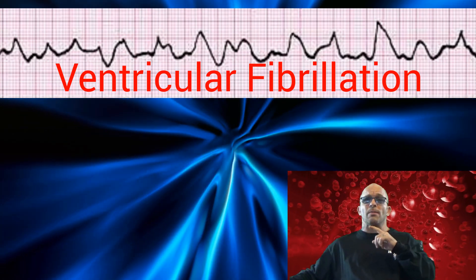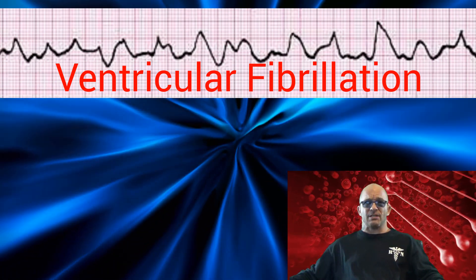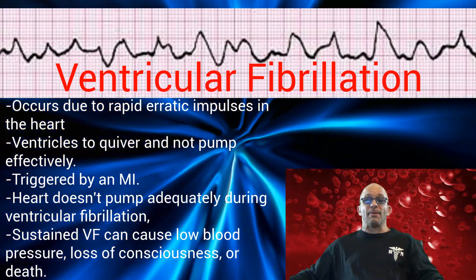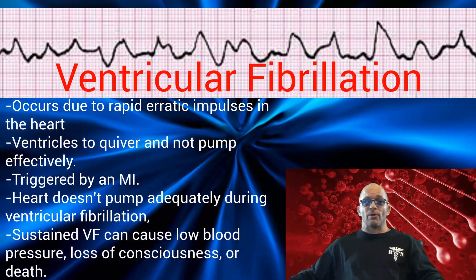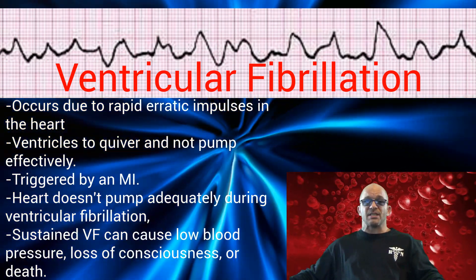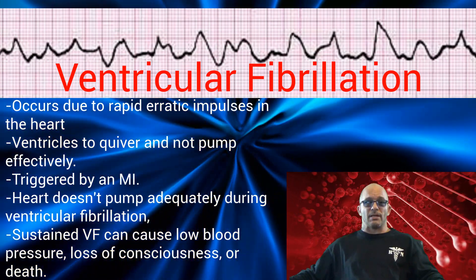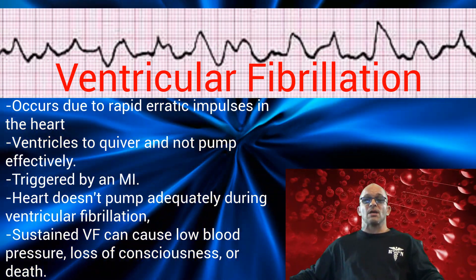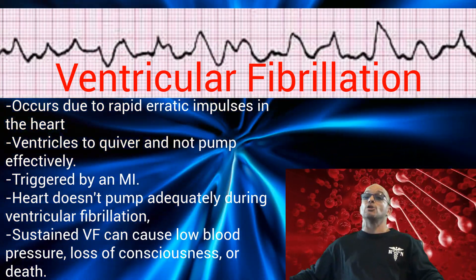The final rhythm we must discuss is known as ventricular fibrillation, or V-fib. It occurs due to rapid erratic impulses in the heart, which cause the ventricles to quiver and not pump effectively. This condition can be triggered by an MI. Because the heart doesn't pump adequately during ventricular fibrillation, sustained V-fib can cause low blood pressure, loss of consciousness, and can even lead to death.